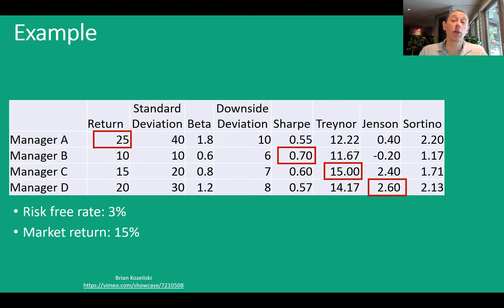Finally, Sortino ratio looking at just that downside deviation, we're going to see manager A is the best. So the conclusion here is not all these measures are going to be equal. They're not going to come to the same conclusion. Clearly, here we have four different managers, four different ones come on top depending on which measure we use.